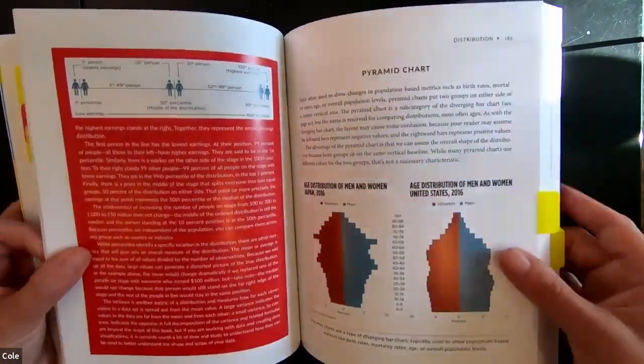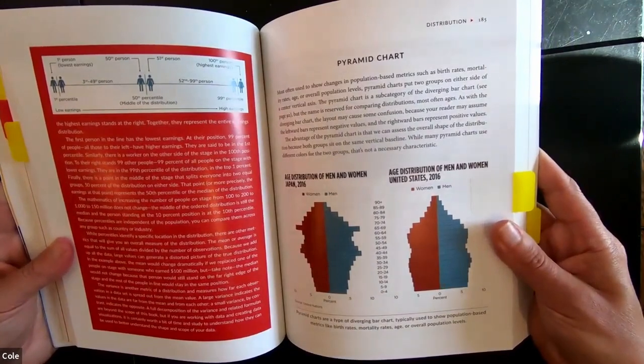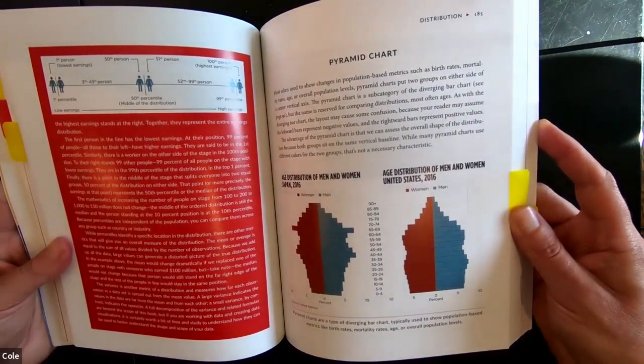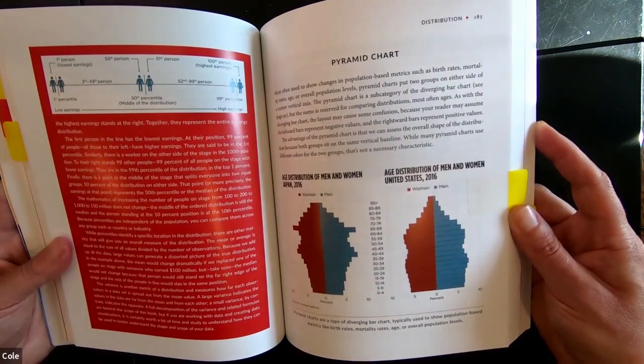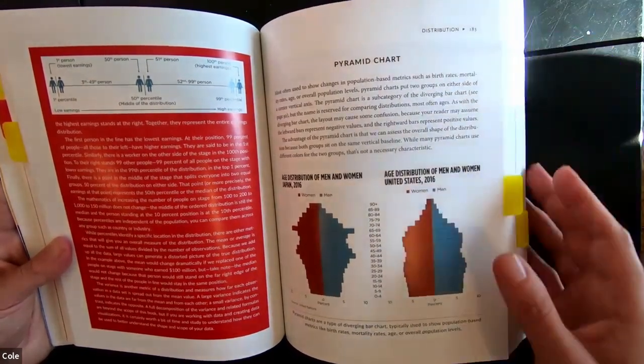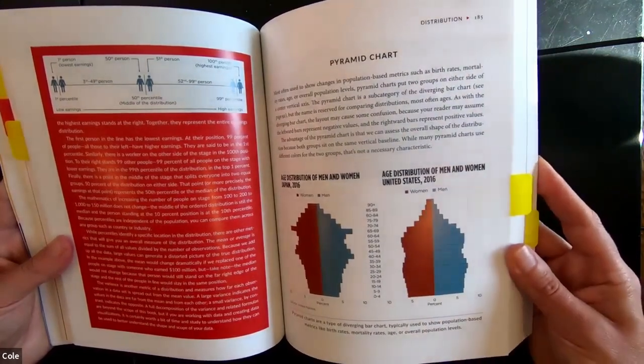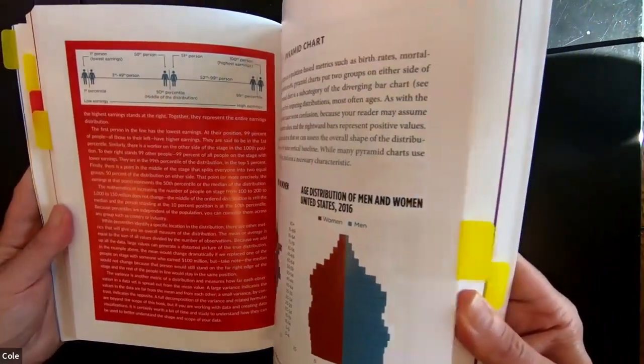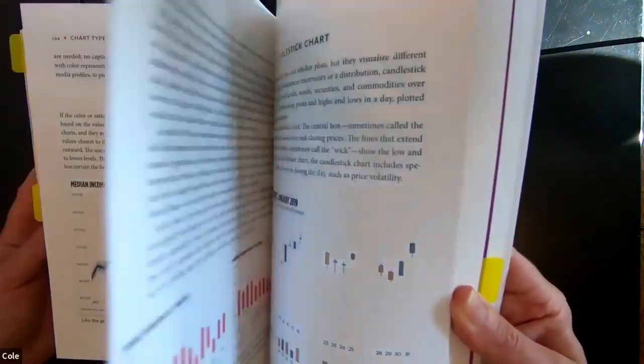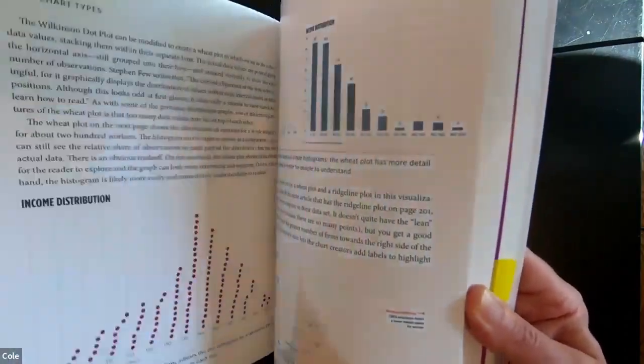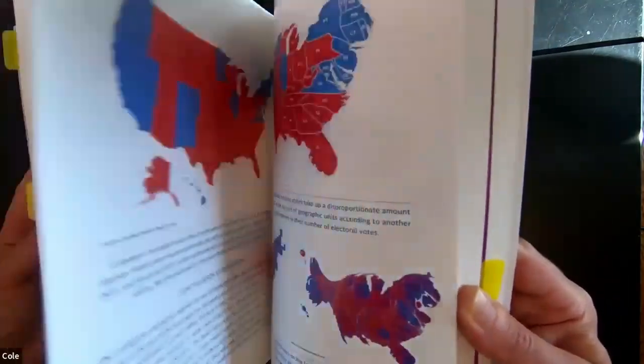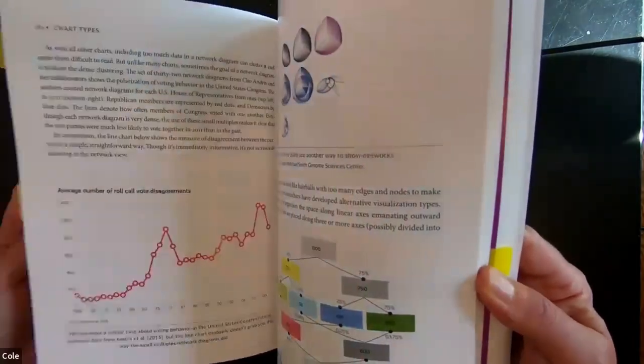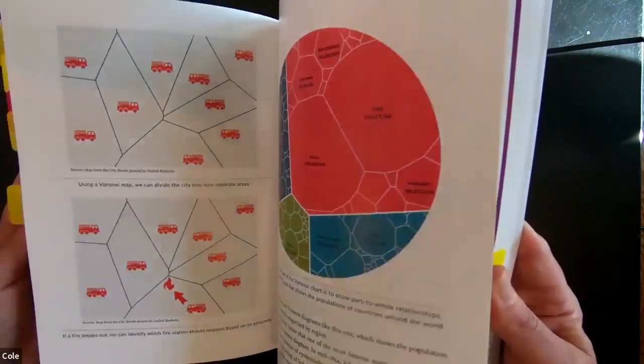Let's take a look back at the book. Let's see, what else did we flag here? The pyramid chart. Most often used to show changes in population-based metrics such as birth rates, mortality rates, age, overall population levels. Pyramid charts put two groups on either side of the center vertical axis. Subcategory of the diverging bar, right? So here's another example of connecting different graph types. Let me see the example. I'm actually just going to flip through some of this now so you can get a sense of just the breadth and sheer volume of different types of visuals and graphs. You see some maps in there, some comic strips, even bubble charts, some circular craziness, and so forth.